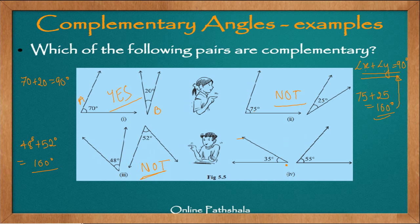Now the fourth problem says 35 degrees and 55 degrees. We use our addition criterion: 35 plus 55 equals 90 degrees. Therefore the two angles in the fourth problem are complementary angles. So this was all about complementary angles and some examples we solved using the concept. In the next video, we will learn about supplementary angles and solve examples using them.